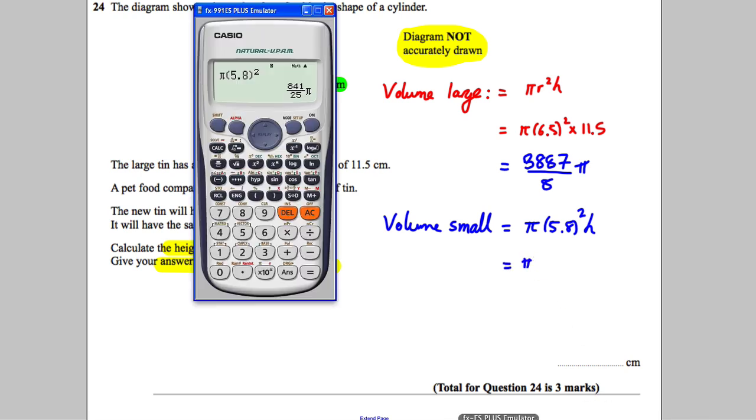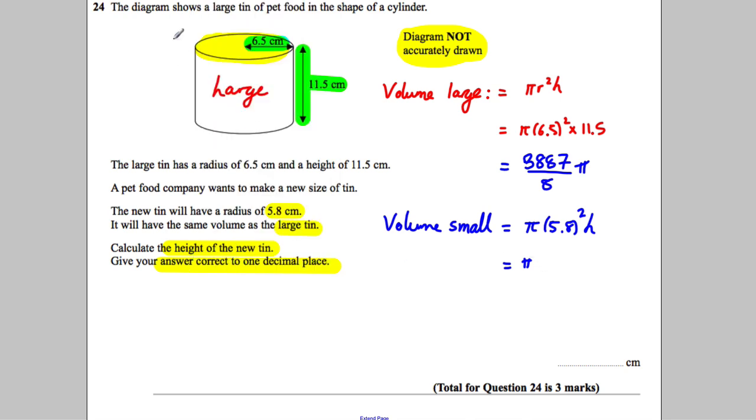So the volume of the small cylinder is going to be 841 over 25 π multiplied by h. For these two volumes to be equal, we can write that 3887 over 8 π equals 841 over 25 π × h.